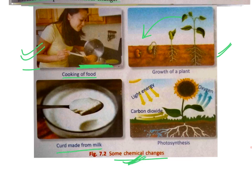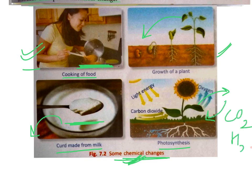Curd made from milk is a chemical change — you can't reverse the process and a new substance is formed. In photosynthesis, food in the form of glucose is formed for the plant, and you can't reverse it back into carbon dioxide and water. A new substance, glucose, is formed, making it a chemical change.